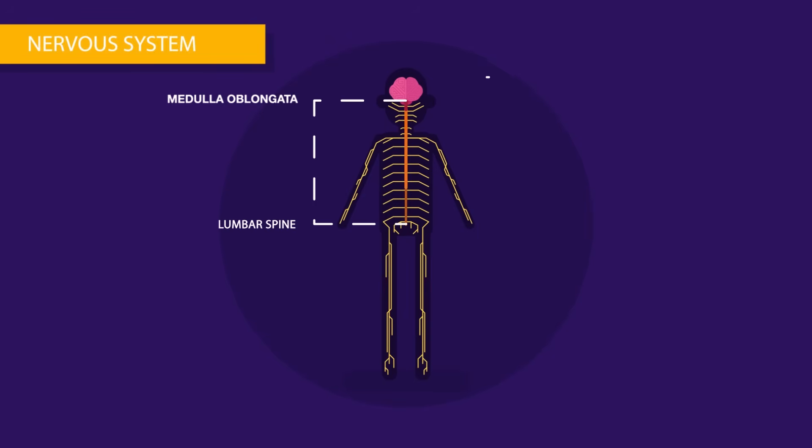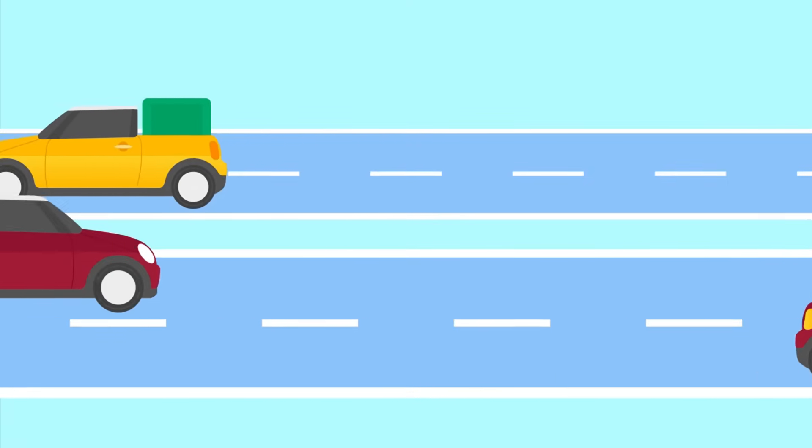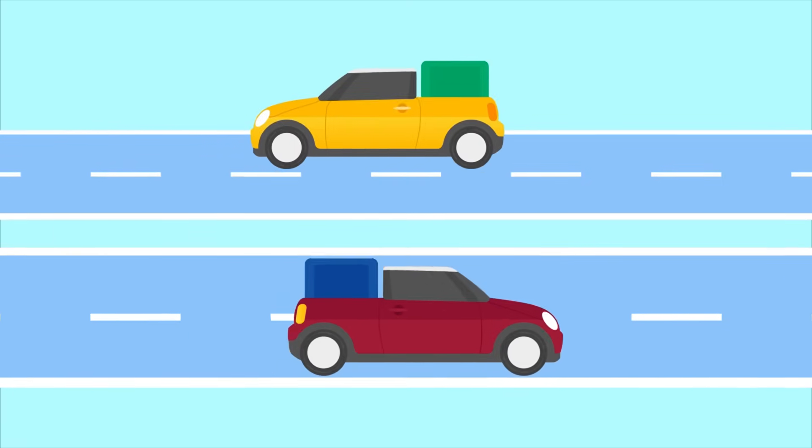The peripheral nervous system is a network of nerves spread across our body. Think of peripheral nervous system as a network of highways that connects the body with central nervous system. This highway has two-way traffic.